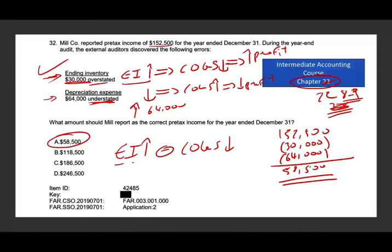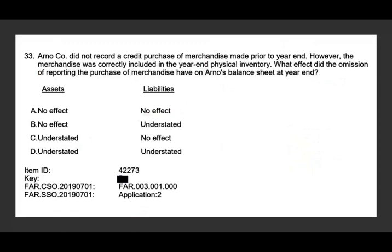Very important concepts here — this is an application problem, but if you understand the relationship between the accounts and how they work, it should be straightforward. Let's look at the next question. Arno company did not record a credit purchase of merchandise made prior to year end. However, the merchandise was correctly included in the year end physical inventory.